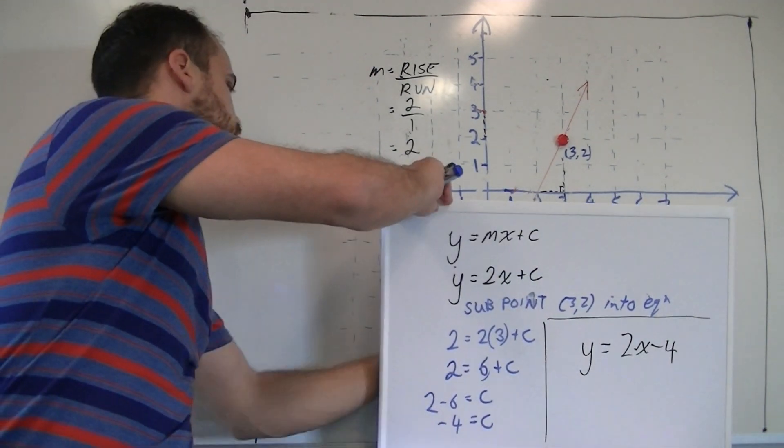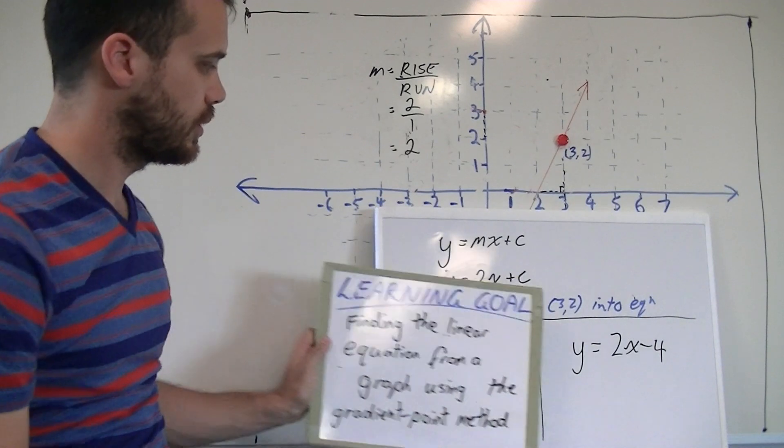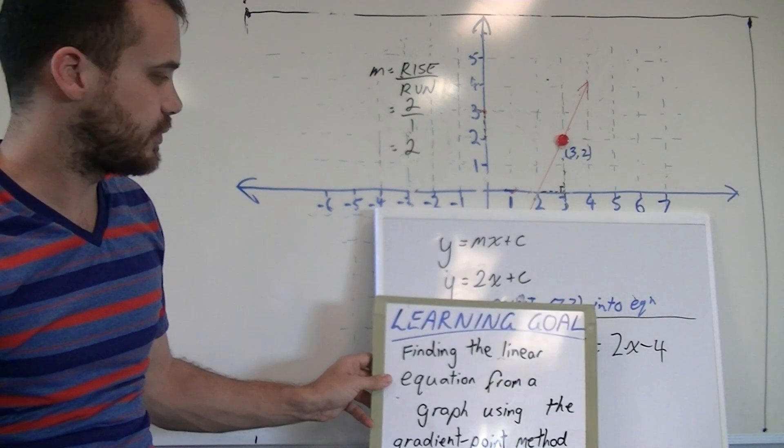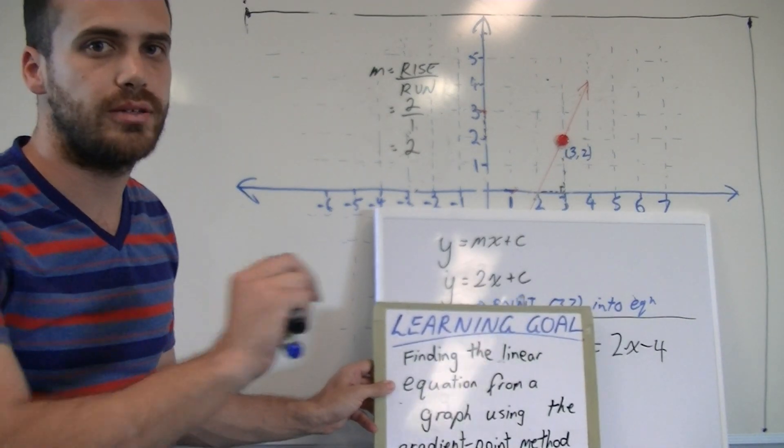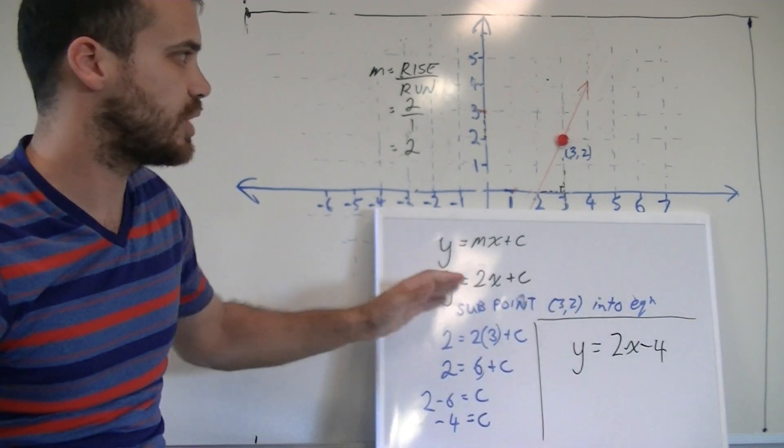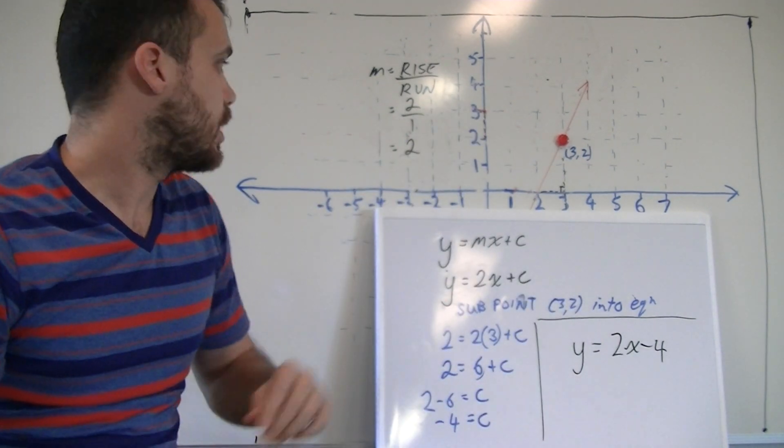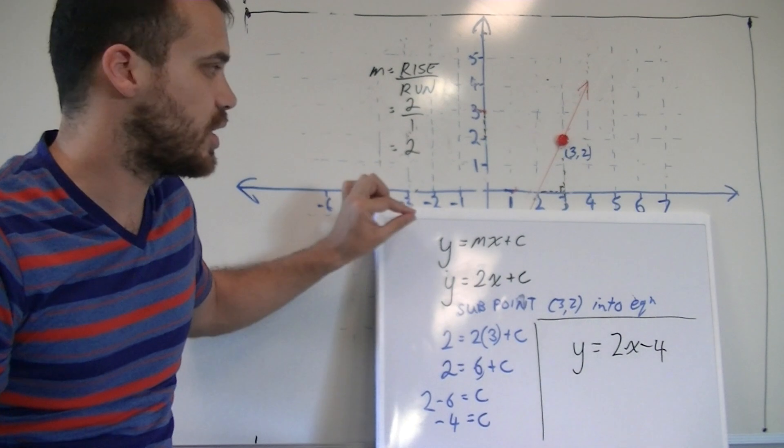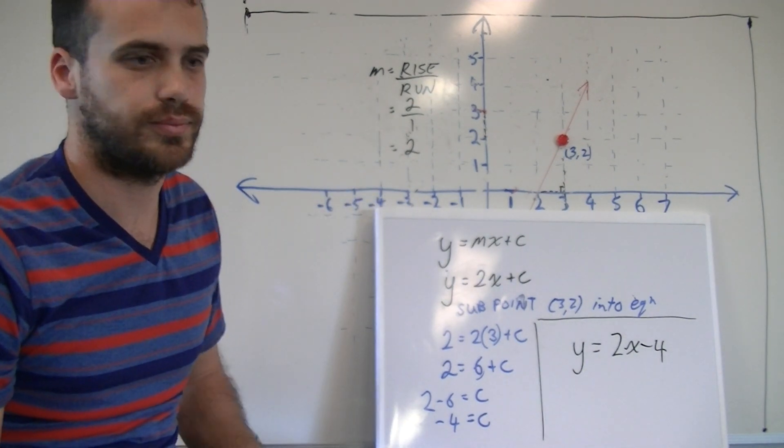Now that was finding the linear equation from a graph using the gradient point method. We've got a straight line, there's a point there, and it allows us to find the equation of that line.